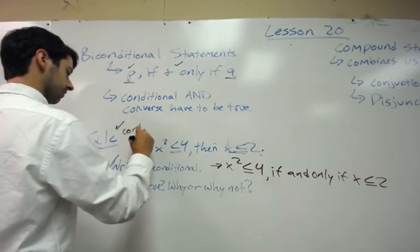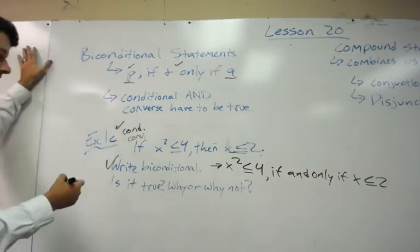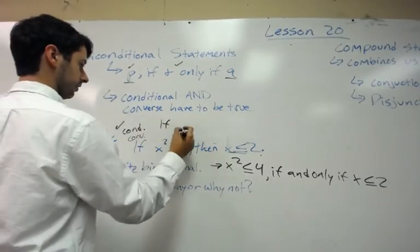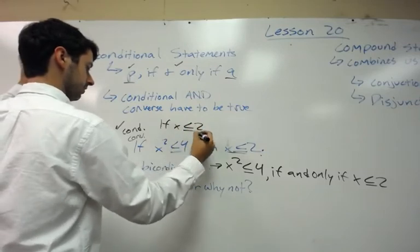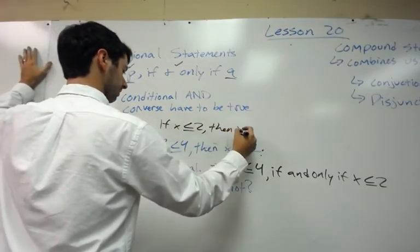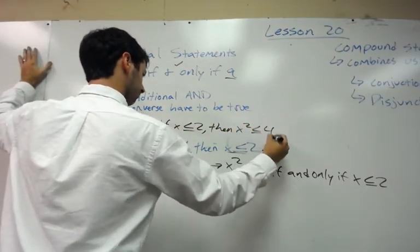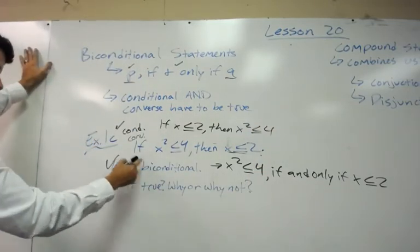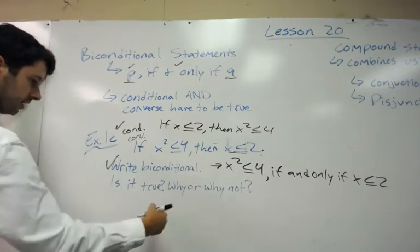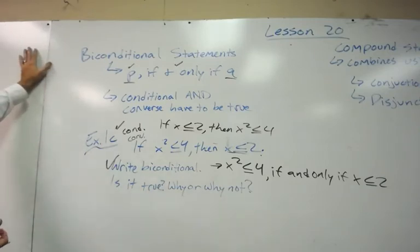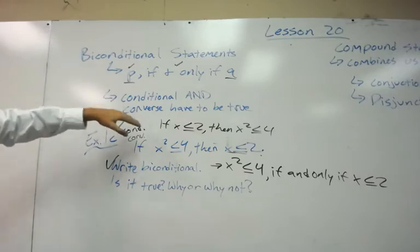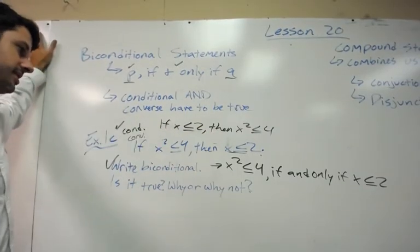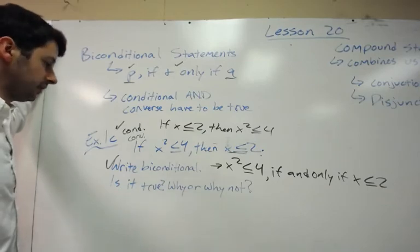But converse, now we have to figure out if the converse is true. The converse would be if x is less than or equal to 2, then x squared is less than or equal to 4. Now, if the converse ends up working, then it's all true. If it doesn't end up working, then it's not true. And then that would be the explanation. But let's see if the converse is true. If x is less than or equal to 2, then x squared is less than or equal to 4. Okay,